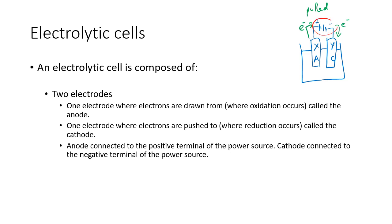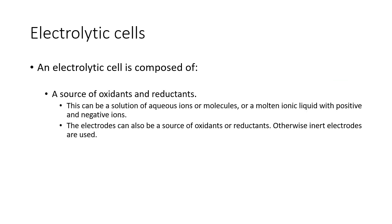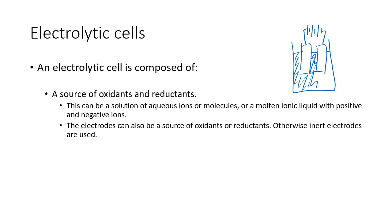From this part of the diagram you should be able to identify what is the anode, what is the cathode, and what the electron flow is. The electrolytic cell is also composed of a source of oxidants and reductants — usually in the solution area. They will oxidize or reduce on the surface of the electrodes. This can be a solution of aqueous ions or molecules.